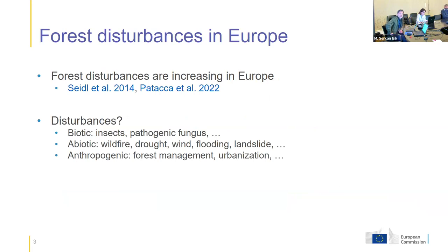We are interested in forest disturbances because those kinds of phenomena are increasing in Europe. When we talk about these disturbances, we have many types. The most common are anthropogenic — we saw it this morning — with forest management practices or some kind of land cover change like urbanization. We also have abiotic disturbances like wildfire, drought, wind, flooding, and so on. And biotic disturbances caused by insects or other pathogen vectors.